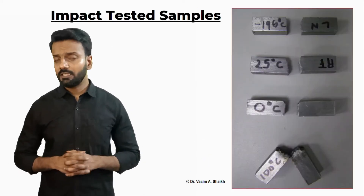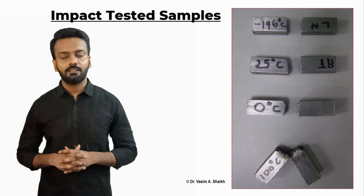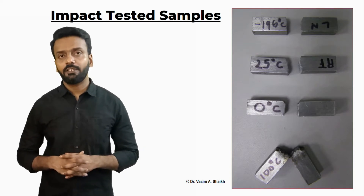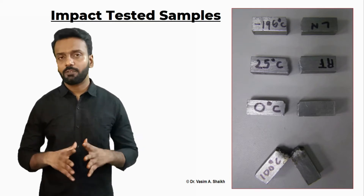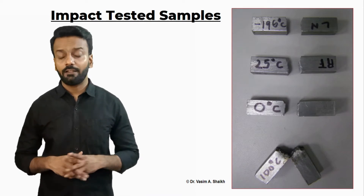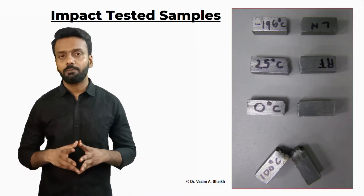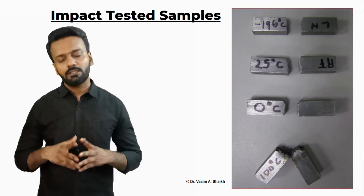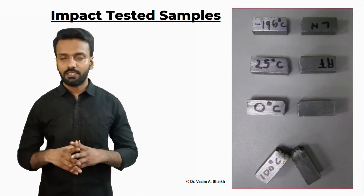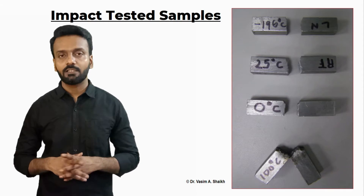Here we can see there are impact tested samples tested at different temperatures. The first one is tested at liquid nitrogen temperature, that is minus 196 degrees centigrade. The second one is tested at room temperature, that is 25 degrees Celsius.